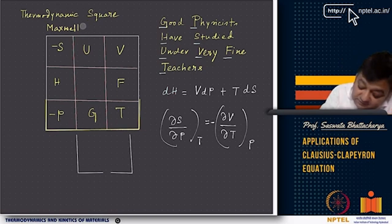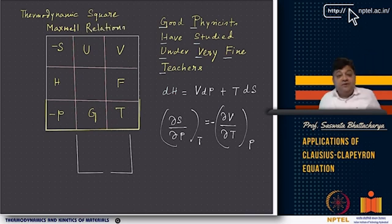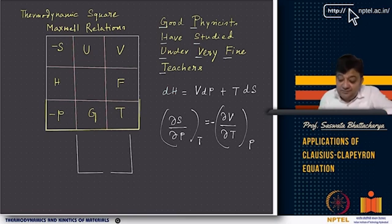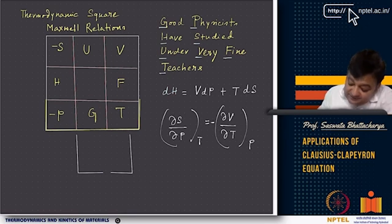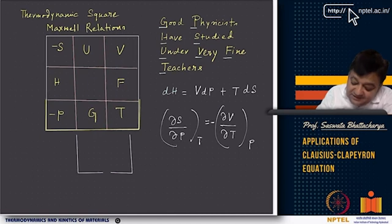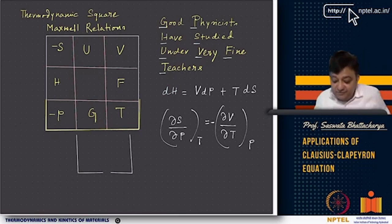Maxwell relations equate second derivatives. Max Bond created a mnemonic called the thermodynamic square: 'Good Physicists Have Studied Under Very Fine Teachers,' giving G, P, H, S, U, V, F, T. For example, taking H directly gives V. The differential dH = V dP + T dS, and you can derive Maxwell relations such as (del S / del P)_T = −(del V / del T)_P.